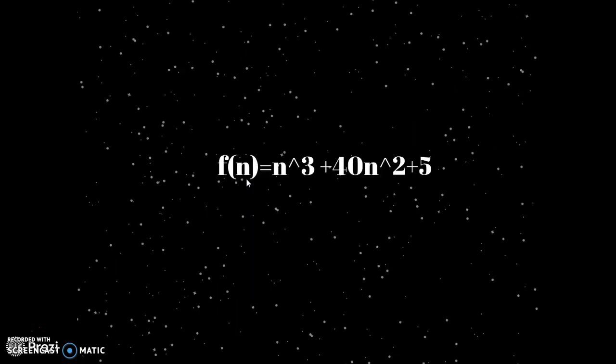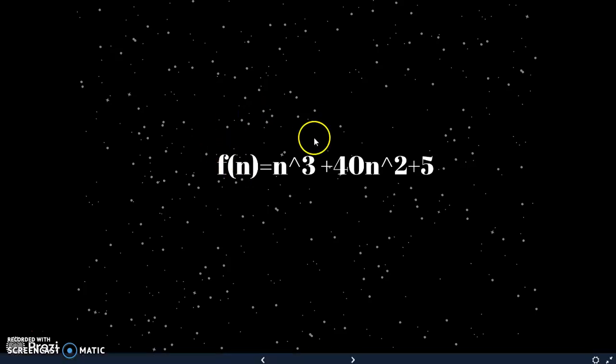We will see one more example - maybe you could do it. It is n cube plus 40n square plus 5. You are right - we will take the term with highest degree which is n cube, the coefficient is 1 you can discard it, which means it is order of n cube.